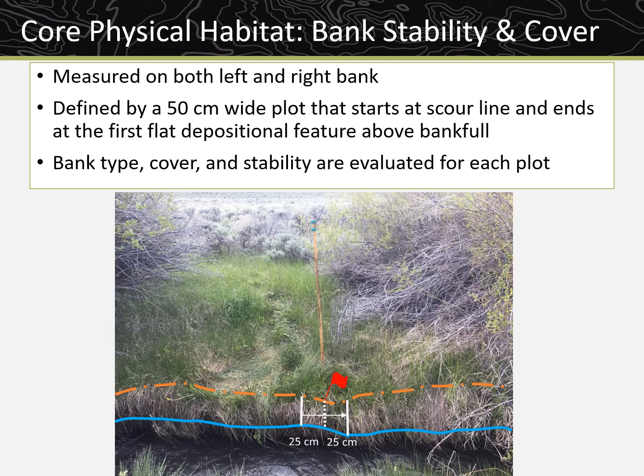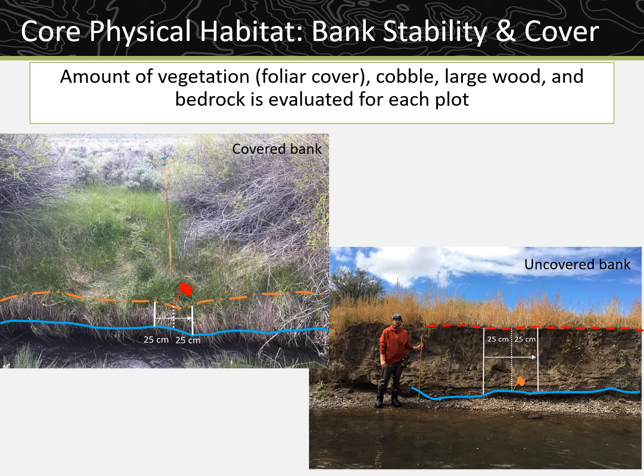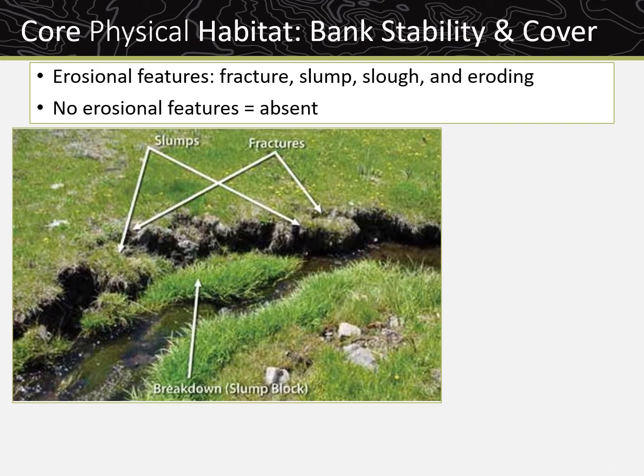Bank stability and cover is measured on both left and right bank and is defined by a plot that is 50 centimeters wide, starting at scour line and ending at the first flat depositional feature at or above bankful. Bank type, cover, and stability are evaluated for each plot. First, plots are designated as either erosional or depositional. Each plot is then evaluated as to whether it is covered or uncovered based on a 50% foliar cover criteria for any combination of vegetation, cobble, wood, and bedrock that provide cover.